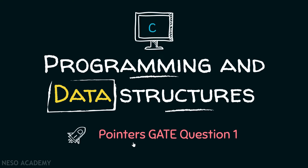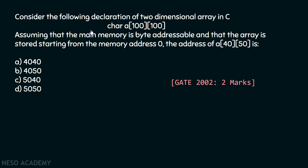Let's consider one GATE question related to pointers. Consider the following declaration of a two-dimensional array in C. Here is a two-dimensional array A which contains 100 rows and 100 columns, and each element of this array is of type character.